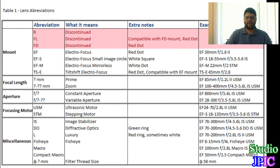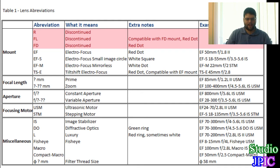I made a table that I'll put a link to below, which you can download at the Studio JPEG website. I divided the lens abbreviations into different categories: the mount, the focal length, the aperture, the focusing motor, and then the miscellaneous abbreviations.